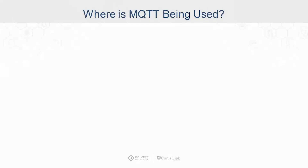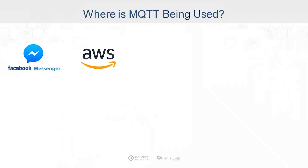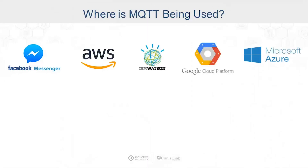Where is MQTT being used? It's been around since 1999 and IBM had it in a lot of their products. One of the first major adoptions was by Facebook Messenger when they were looking for a more efficient, more reliable, more simple protocol to use. That kind of blossomed into a lot of cloud service providers providing native MQTT connectivity into their infrastructure as well.